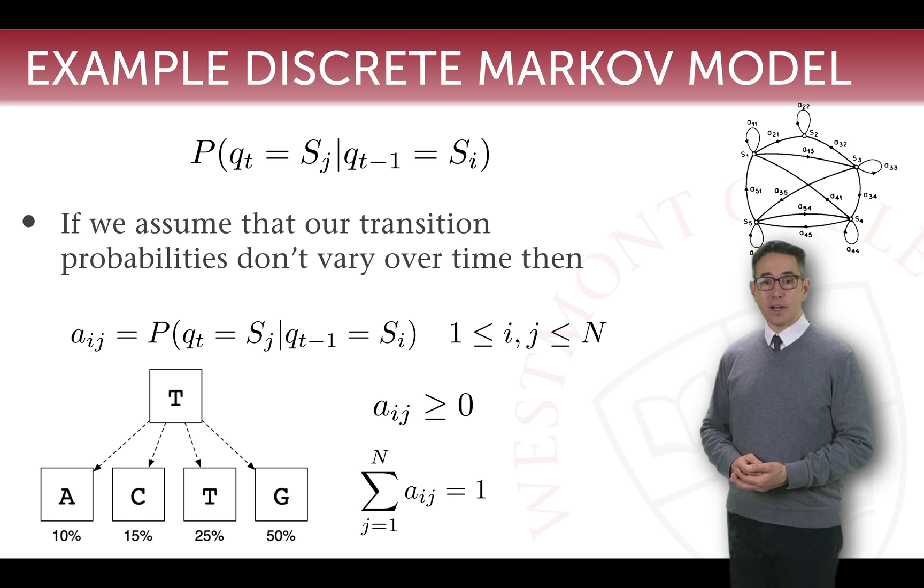If we think back to our example of the DNA strand using the Markov property we can say that aij represents the transitions from t to a, t to c, t to t, and t to g. Where i in this case is the state t, in this system we have four states. And j, if we set j equal to a, well then aij equals the probability of moving from t to a is 10 percent.